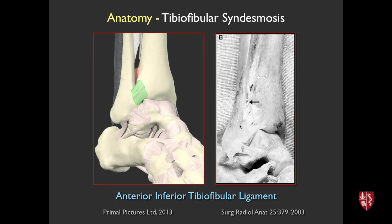As you continue cephalad, you see the interosseous membrane forming the syndesmosis. We need to make sure you distinguish this tibiofibular ligament from the talofibular ligament down here. On the 3D image, here's the talus, and this is the anterior talofibular ligament — that's the classic lateral ankle ligament sprain, not to be confused with the tibiofibular ligament.